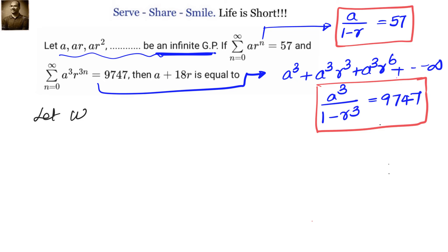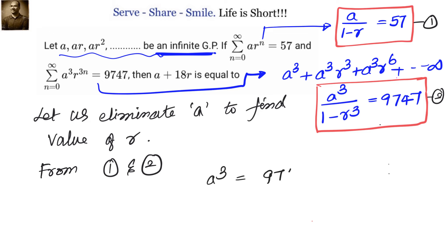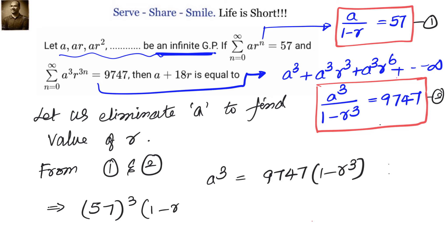Now we have these two equations. Our approach will be to eliminate A so that we can get the value of R, then come back and calculate the value of A. The concept is very easy. From the first equation, A equals 57 times (1 minus R). Our second equation is A³ by (1 minus R³) equals 9747, so A³ equals 9747 times (1 minus R³). Substituting A: 57³ times (1 minus R)³ equals 9747 times (1 minus R³).